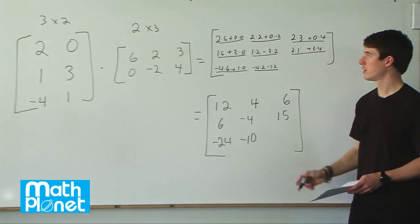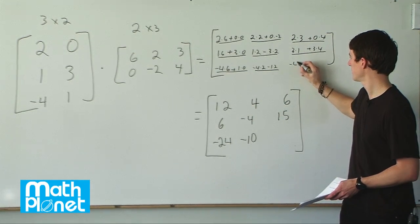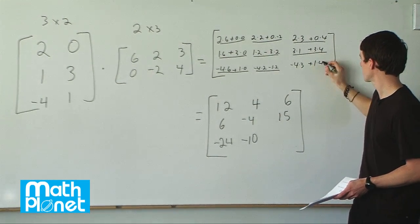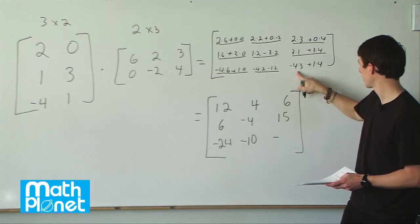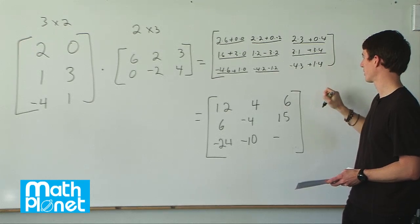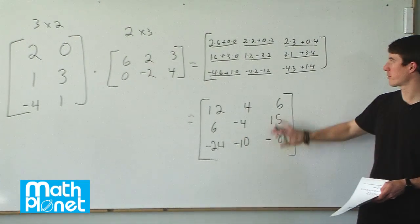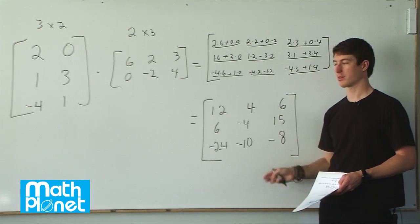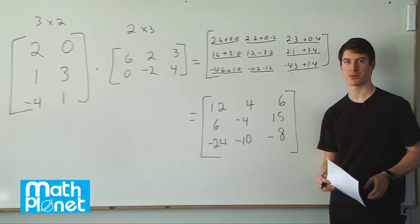Finally, one last arithmetic step: the third row, third column. Negative 4 times 3, which is negative 12, plus 1 times 4, which is positive 4. So negative 12 plus 4 gives us negative 8. That's our final arithmetic step, and here we have our final 3 by 3 matrix. We had a 3 by 2 matrix times a 2 by 3 matrix, and that gave us this 3 by 3 matrix.